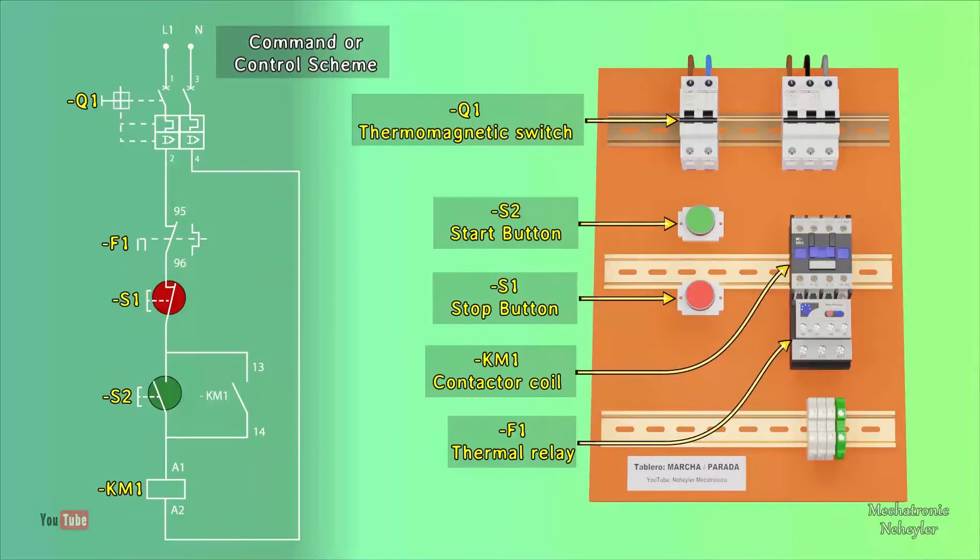KM1 corresponds to the supply that must be made in the contactor coil, as well as for its self-holding. F1 corresponds to the thermal relay, which fulfills the function of protecting the motor against a possible overload or overheating in the motor winding.